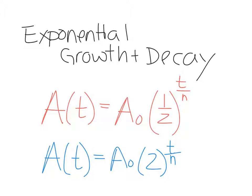Okay, so if we look at the top equation, A of t equals A naught, they call this thing, they say A naught, A naught times a half to the power of t divided by h. So this is the equation for exponential decay.